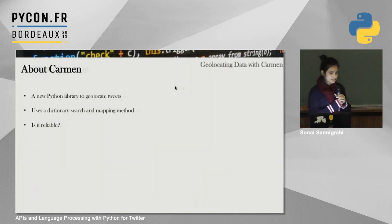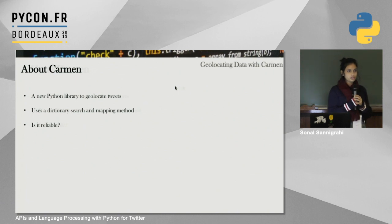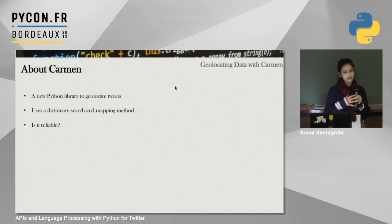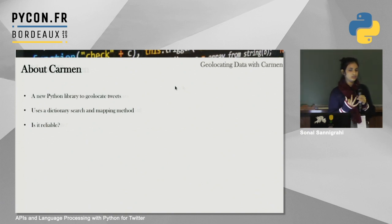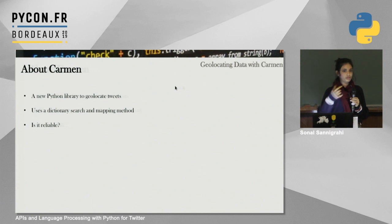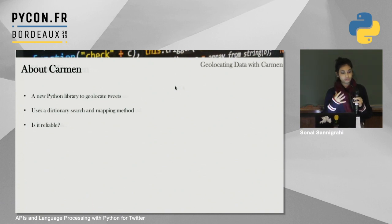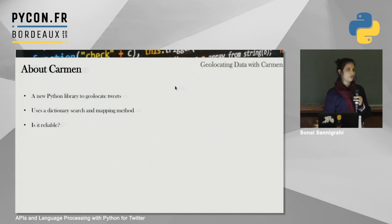Carmen is a library that aggregates a lot of information with different spellings and abbreviations of place names, so you can accurately match, for example, 'NY' to 'New York', or 'New York' with different casing to the same result. So you can get a pretty good estimate of where your tweets are coming from.